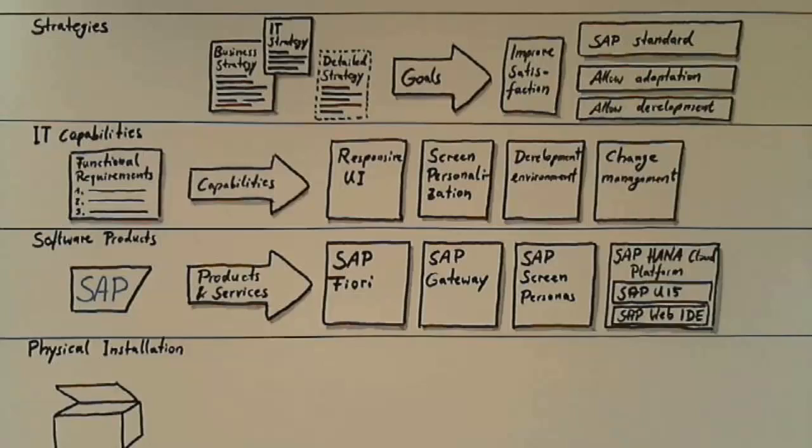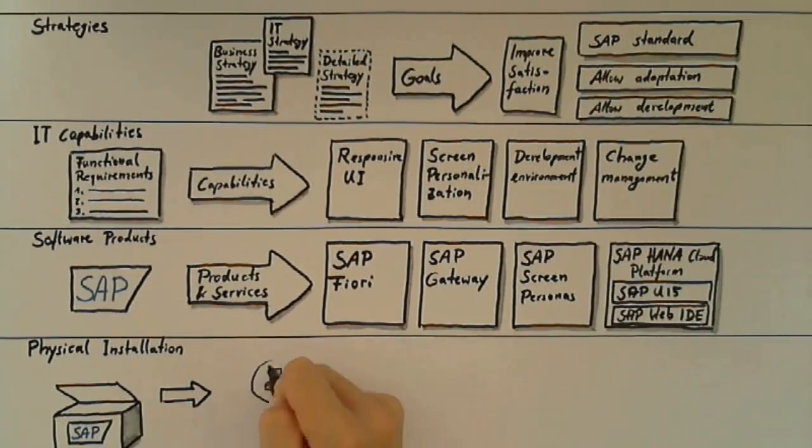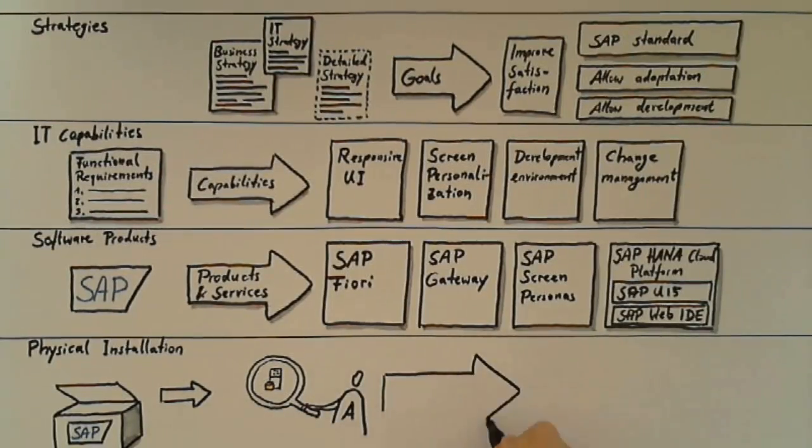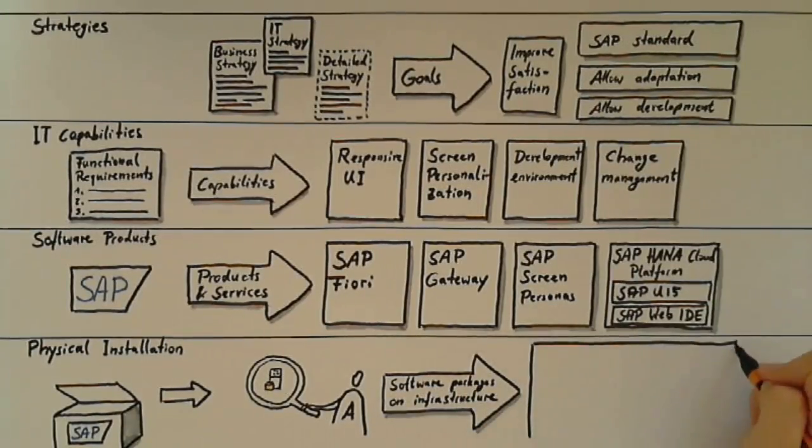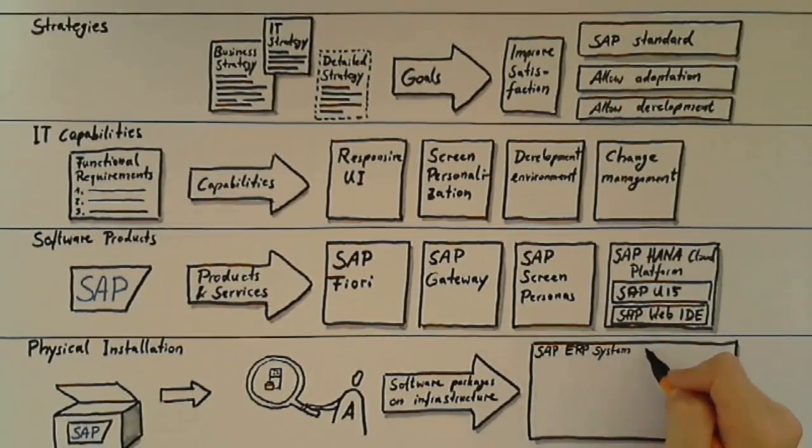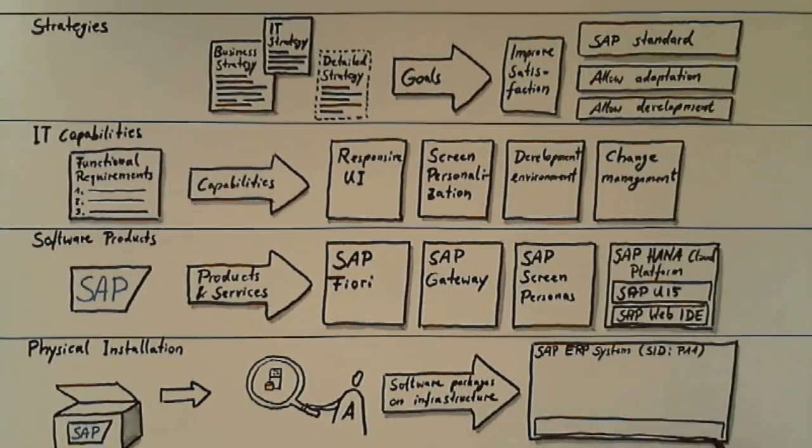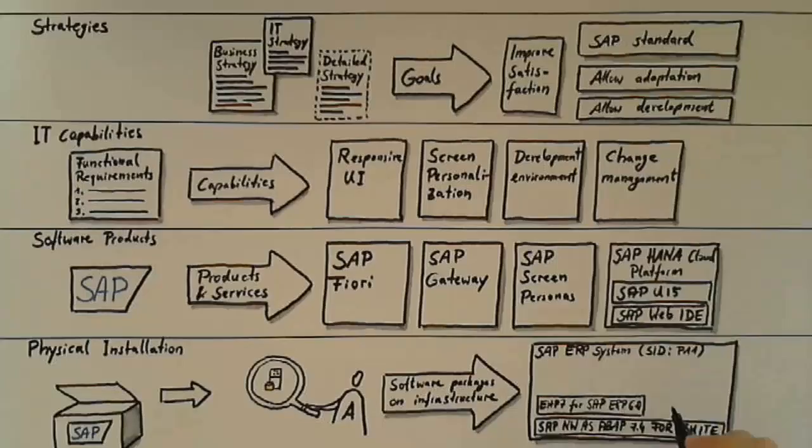The lowest level of this framework targets all architecture related decisions about the physical installation of software packages on hardware boxes including possible virtualization layer in between. An example here might be a productive SAP ERP system named P11 that includes a SAP Application Server 7.4, SAP ERP 6.0 and additional software packages for SAP Screen Persona 3.0 or SAP Fiori.